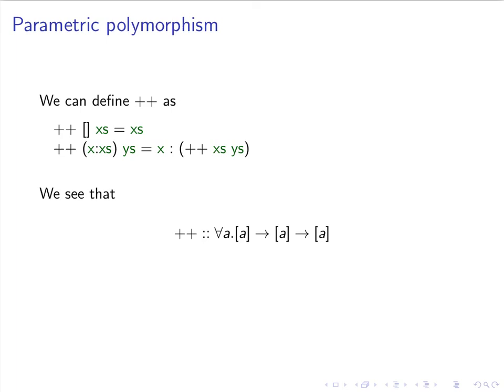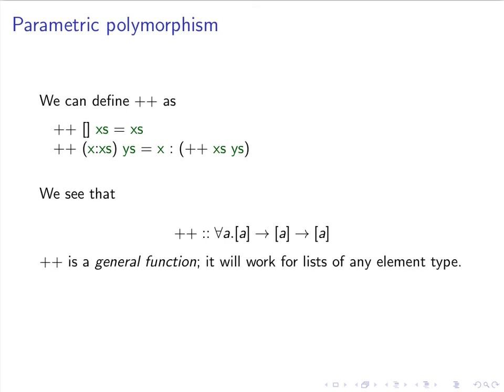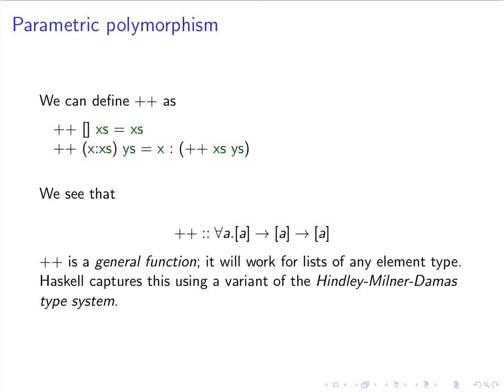So we see that the append function has type A-list to A-list to A-list, for all element types A. Append is really a general function — it'll work for lists of any element type. This is parametric polymorphism: a general implementation instead of a collection of specific implementations. Haskell captures parametric polymorphism using a variant of what's known as the Hindley-Milner-Damas type system.